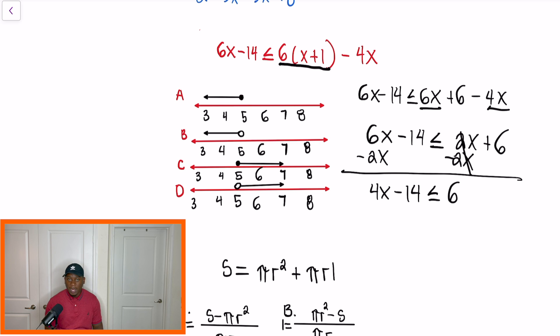All right, so we're almost done now. So next step, we continue to combine our like terms. And I'll have 4X is less than or equal to 20. And once we divide by 4 every one, our final answer should be X is less than or equal to 5.